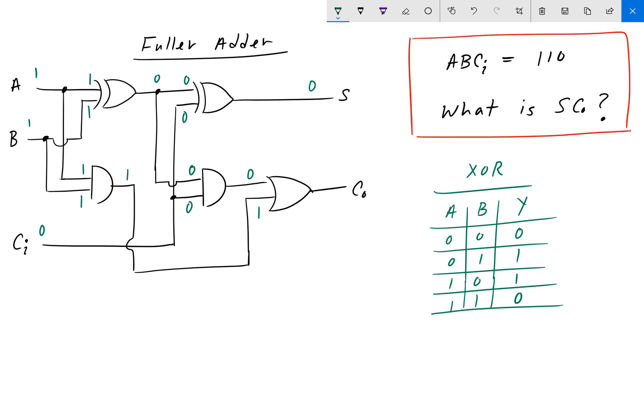And lastly, we have an OR gate. The OR gate is going to be 1 whenever any of the inputs is 1. So, that is a 1. So, from this here, we have that S, C_O is equal to 0, 1.